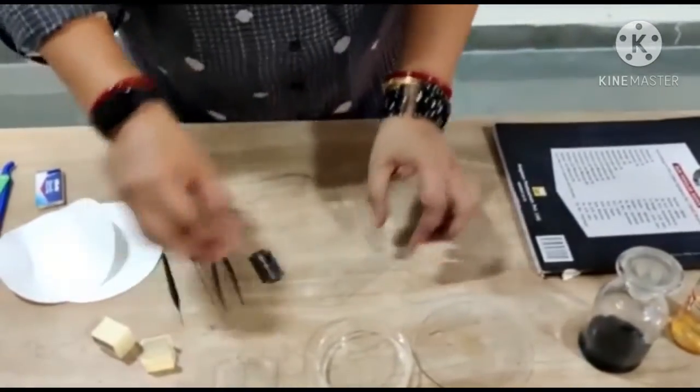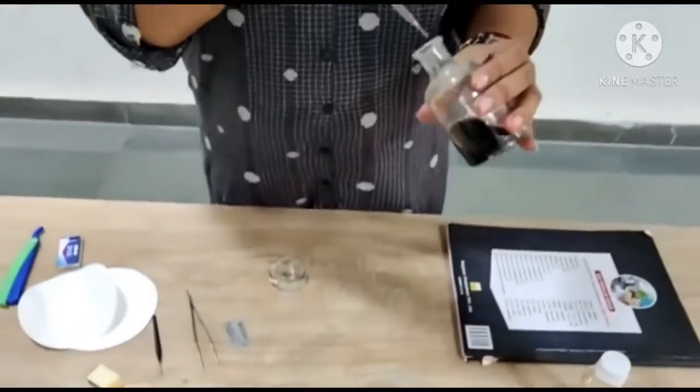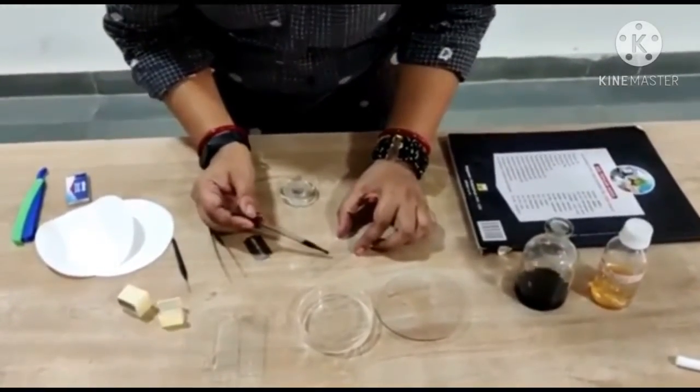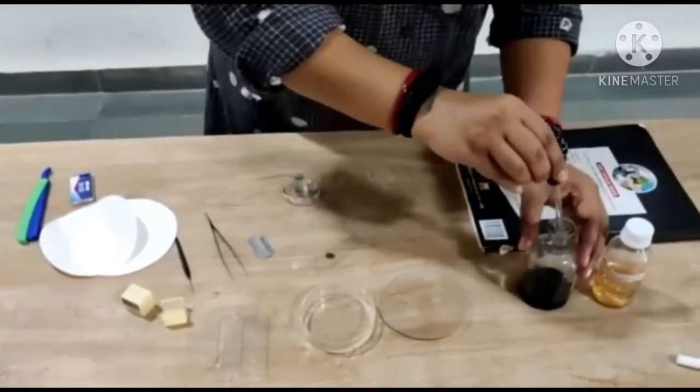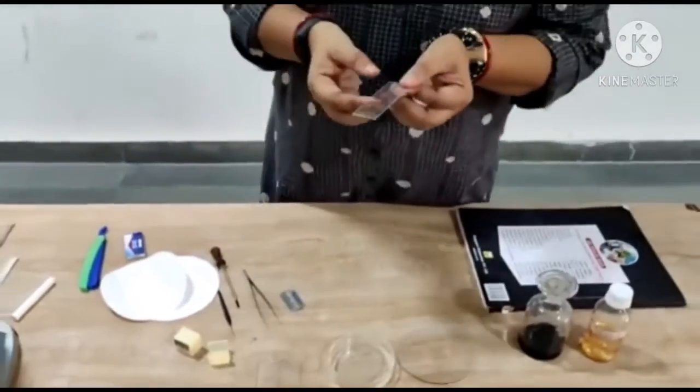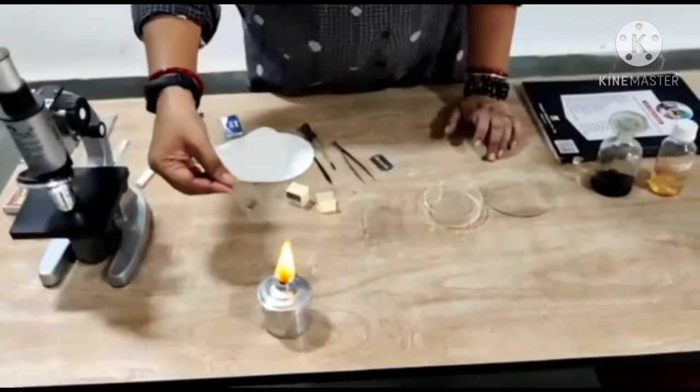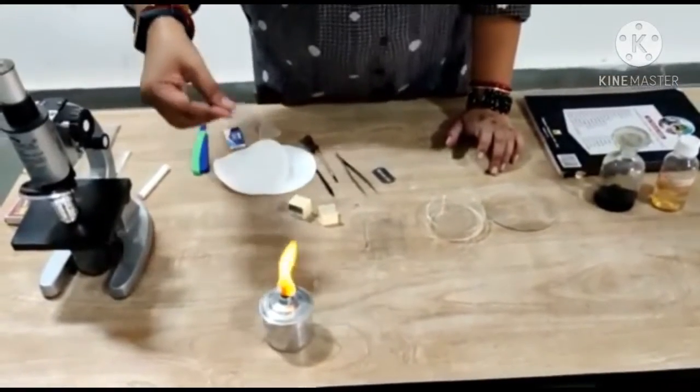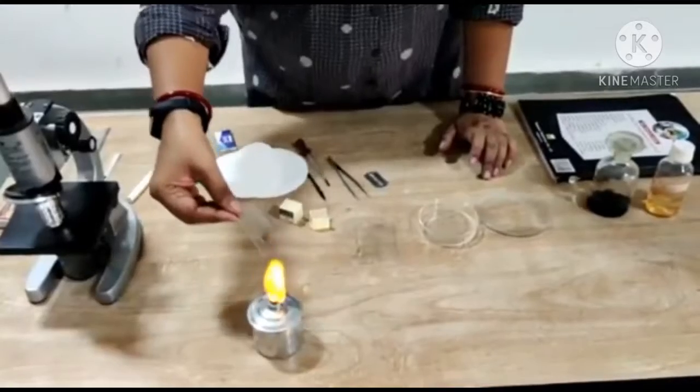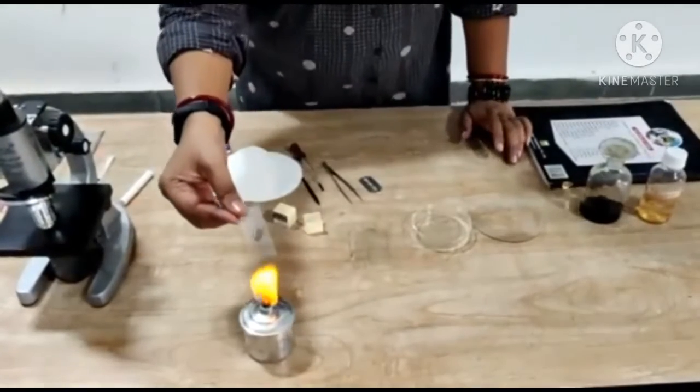Now, we will put two drops of stain in it. This is the acetocarmine stain, which is used for staining of nucleus and chromosomes. Put the stain carefully. After putting the stain, we will warm the slide by keeping it over the spirit lamp. Do not heat the slide, just intermittently warm it. Why is warming necessary? It is necessary to fix the dividing cells at some stage.